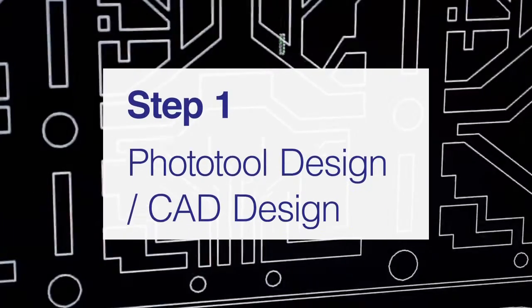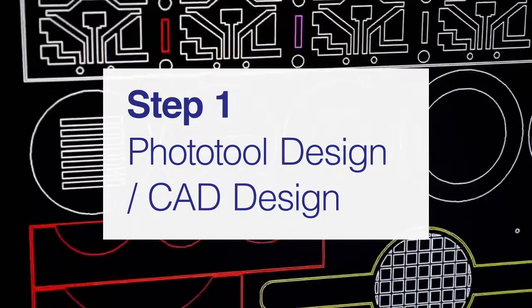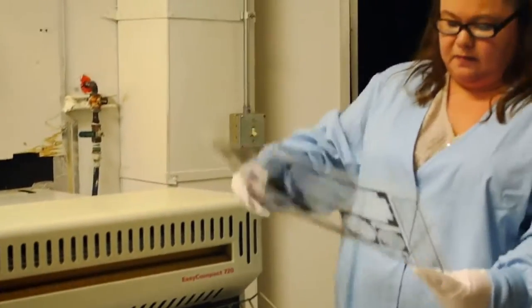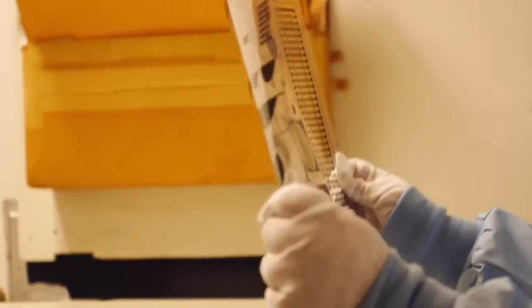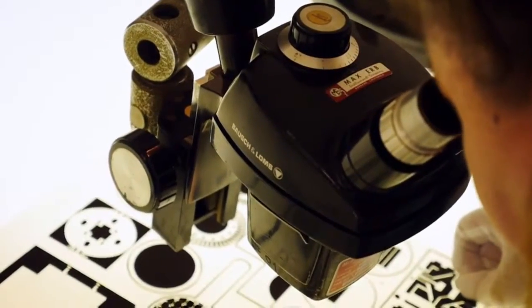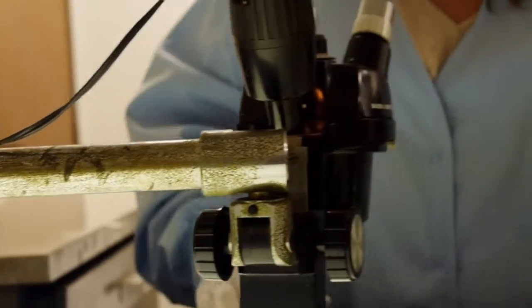The process begins by creating a photo tool. This can be created from a DXF or DWG file that can be sent to us via email or through the mail. This is converted and turned into a working photo tool for creating your part. Because of this process, the tooling can be adjusted to redesign quickly and at a minimal cost.